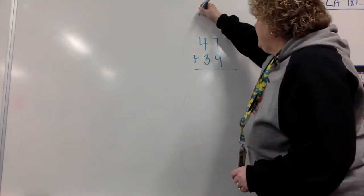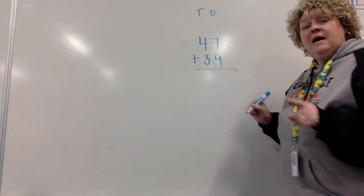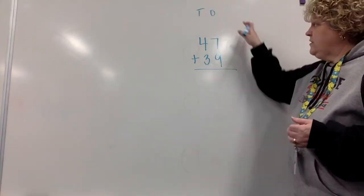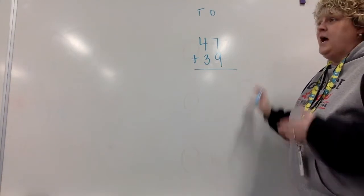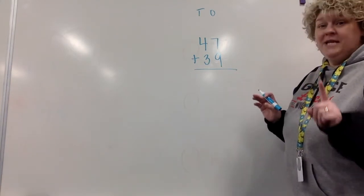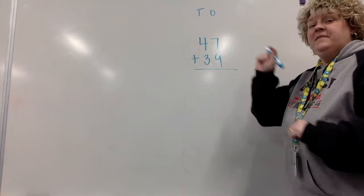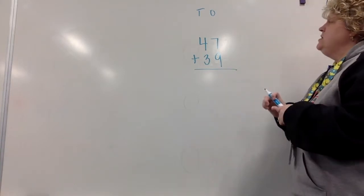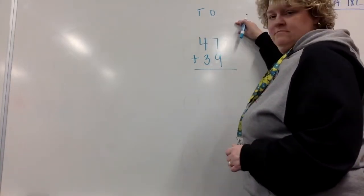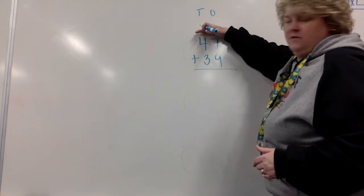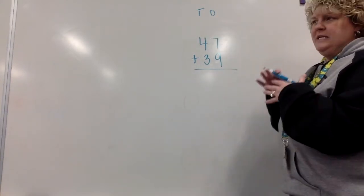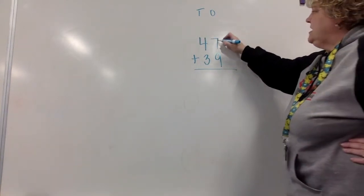So the first thing we're going to do is we're going to write a T and an O above it. I would like you to get out a piece of paper and I want you to do this for me. I want you to work along with me. Remember, you can hit pause and catch up and then hit play again. So I have lots of space in here. We need that room. We need lots of room. So seven plus nine.